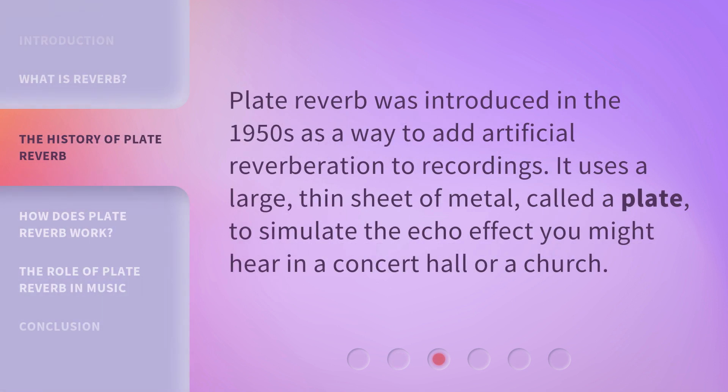Plate reverb was introduced in the 1950s as a way to add artificial reverberation to recordings. It uses a large, thin sheet of metal, called a plate, to simulate the echo effect you might hear in a concert hall or a church.